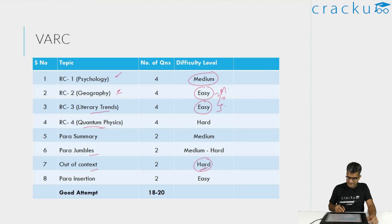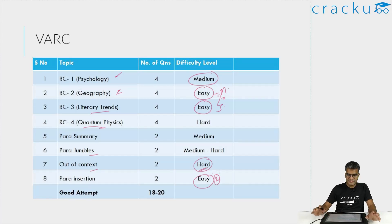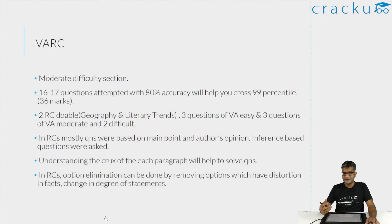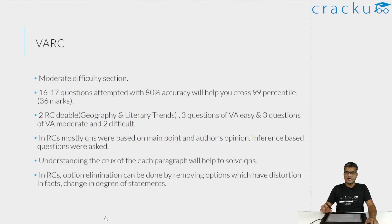The para insertion, on the other hand, I felt was fairly on the easier side — something you should get both correct. As far as verbal is concerned, let us now look at the expected percentiles and how many questions should be attempted. Normally, I feel if you are scoring around 36 marks, you can expect around 99 percentile.